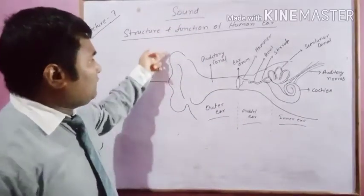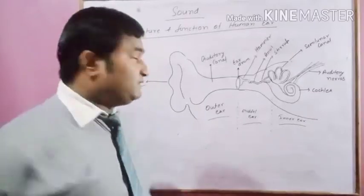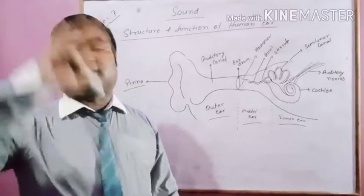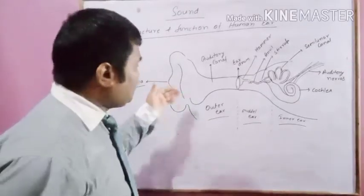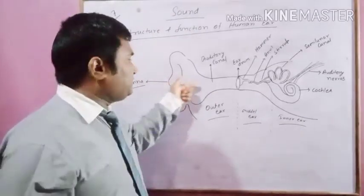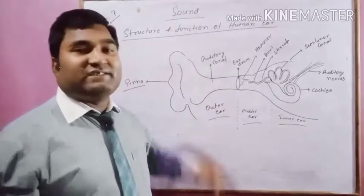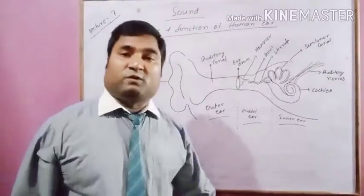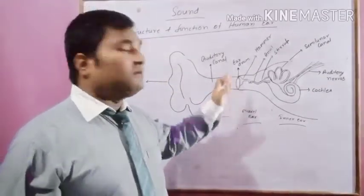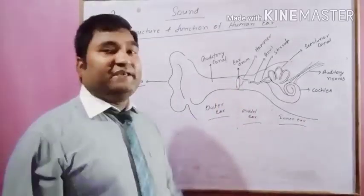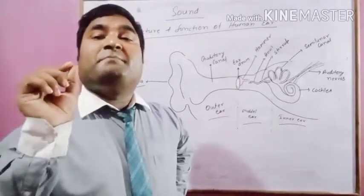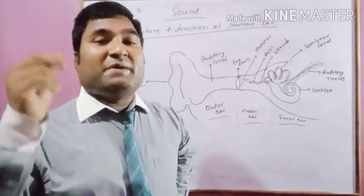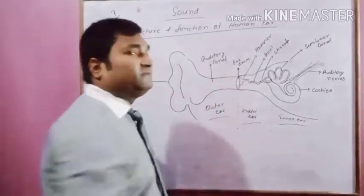This one, the outer structure which you see, this is called pinna and this pinna collects the sound wave in the surrounding and it passes it to a canal, a tube-like structure. This is called auditory canal. It is also called ear canal. At the end of the ear canal, there is an eardrum. What is eardrum? A membranous structure, a membrane. That membrane is present at the end of the auditory canal.